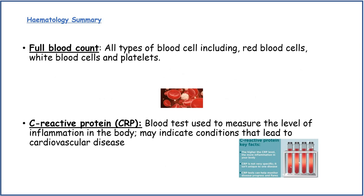A full blood count covers all types of blood cells, including red blood cells, white blood cells and platelets. C-reactive protein, or CRP, is a blood test used to measure the level of inflammation in the body, and it may indicate conditions that lead to cardiovascular disease. So CRP indicates inflammation.